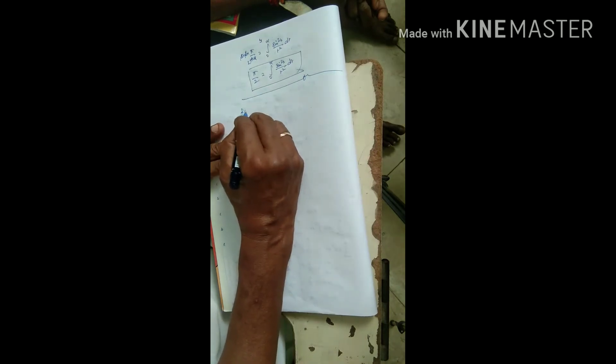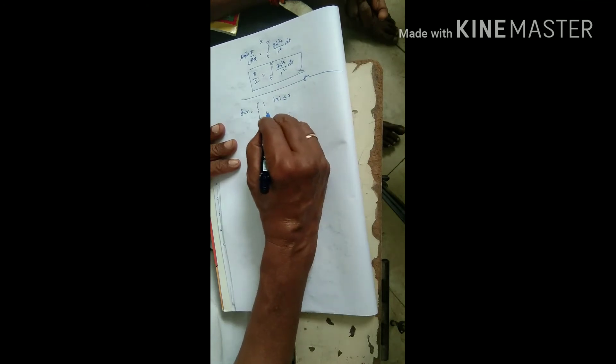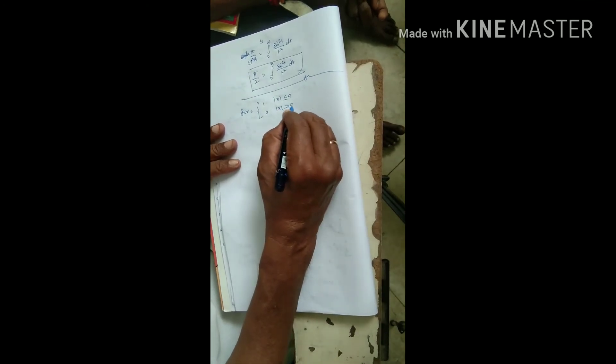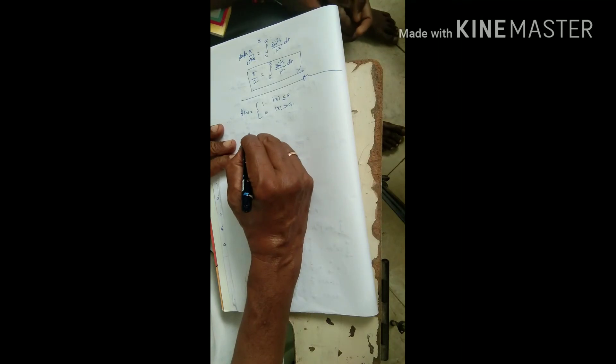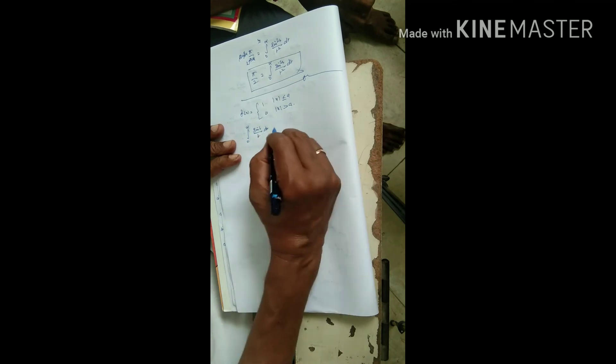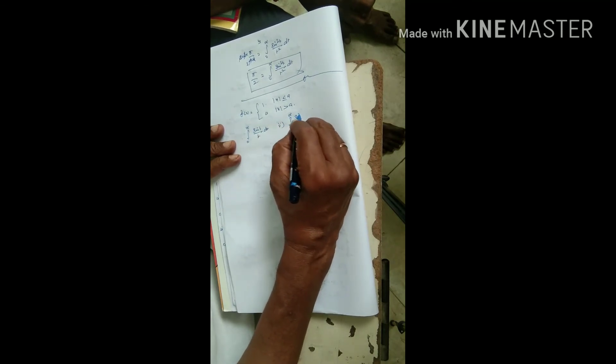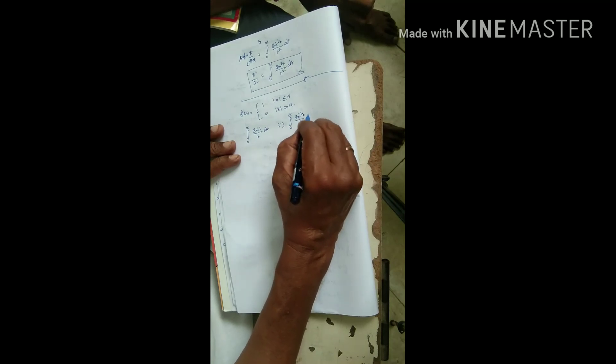Related problem: f of x equals 1 if mod x less than or equal to a, f of x equals 0 if mod x greater than or equal to a, and deduce integral 0 to infinity sin t by t dt and sin square t by t square dt.